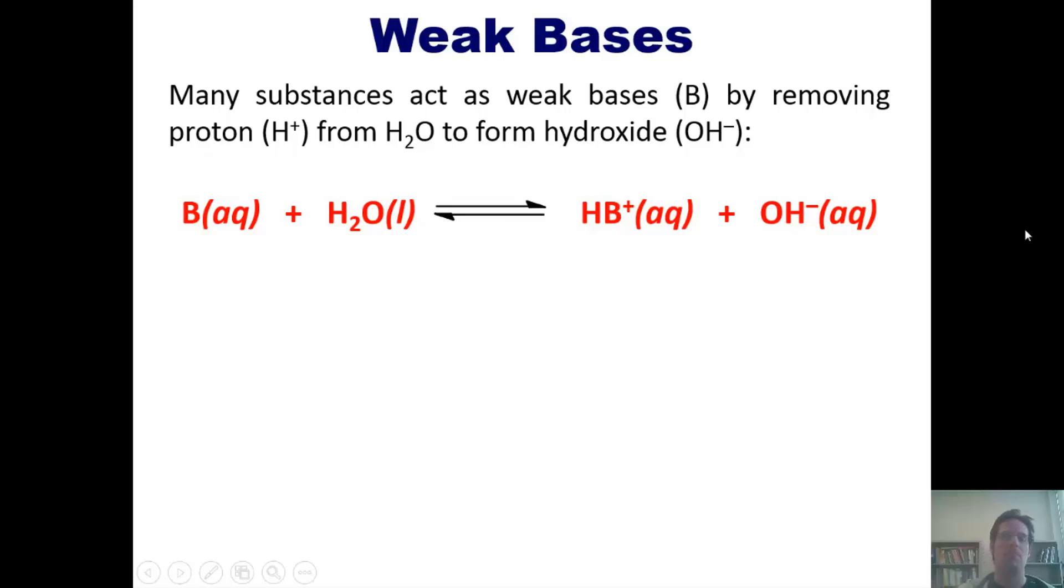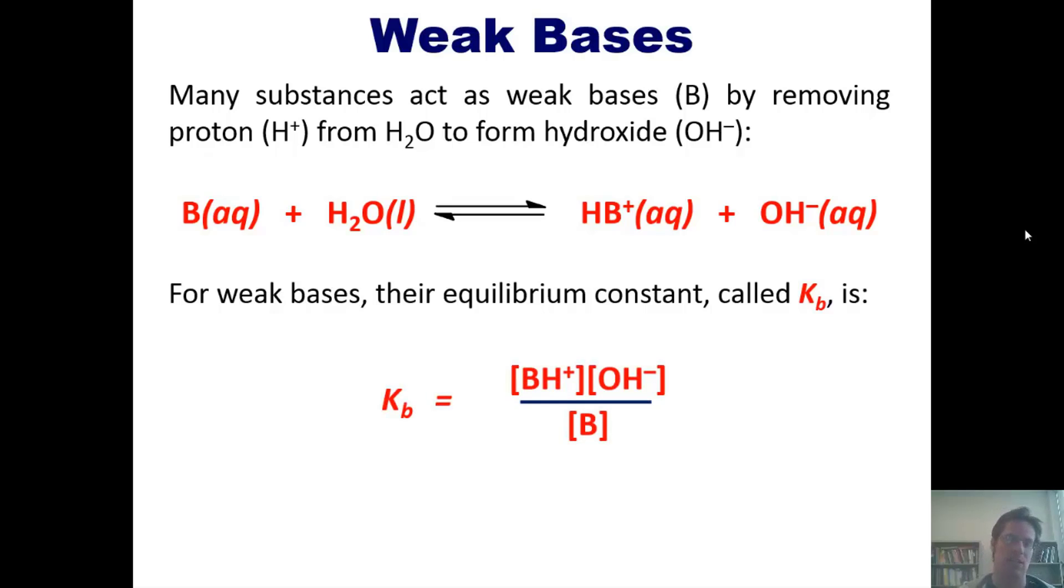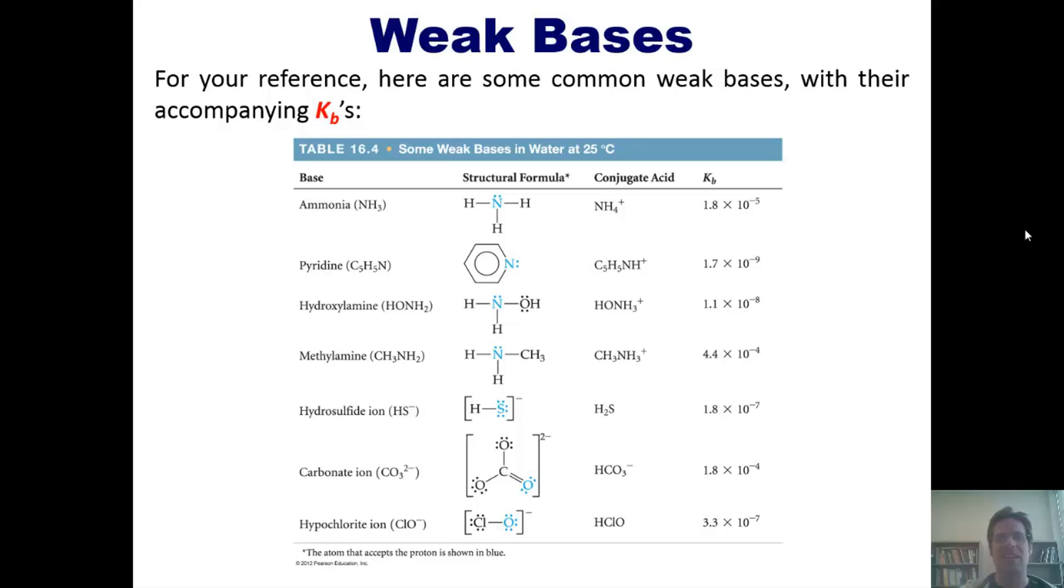This type of interaction is the interaction of a weak base because I've got an equilibrium arrow, a back and forth. For weak bases, their equilibrium constants are called KBs. For your reference, here are some common weak bases with their accompanying KBs. All these KBs are less than one, indicating that they are weak bases.